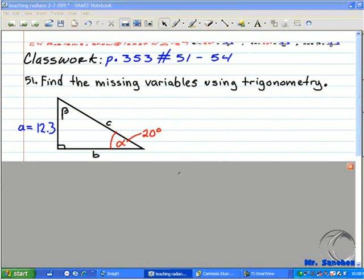Below is variable B and the hypotenuse is C. Given information is that alpha, its measure is 20 degrees and its opposite side, side A, is 12.3.